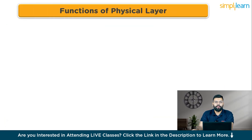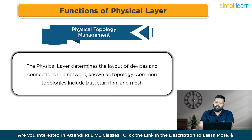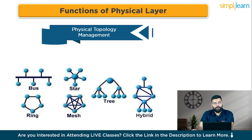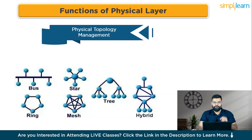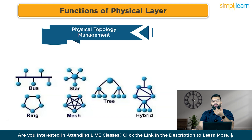Function three is physical topology management. The physical layer determines the layout of devices and connections in a network, known as topology. Common topologies include bus, star, ring, and mesh. Think of network topology like a city map — the layout of roads and intersections (network topology) determines how vehicles (data) travel between locations (devices).